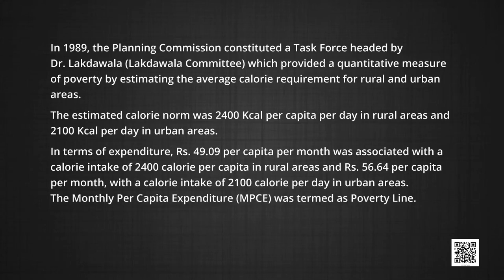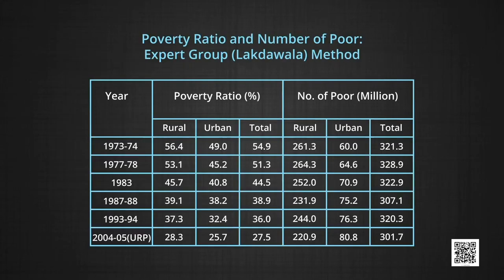The monthly per capita expenditure, popularly known as MPCE, was termed as the poverty line. Now let us see Table 1, which shows the poverty ratio in percentage and absolute number of poor people in both rural and urban areas from the year 1973-74 to 2004-05. There has been a decline in both absolute number as well as percentage. It may be noted that URP or uniform reference recall period consumption is one in which the consumer expenditure data for all items were collected from a 30-day recall period.